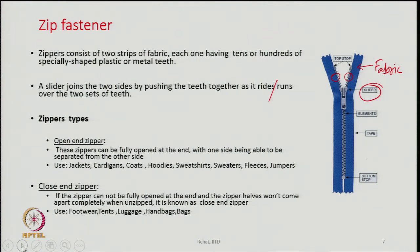The other zipper type is the closed-end zipper, where the zipper cannot be fully opened at the end — the two halves do not come apart completely when unzipped. Closed-end zippers are used in footwear, tents, luggage, handbags, and bags. There are many types of zippers, and depending upon the end use, the type chosen will change.